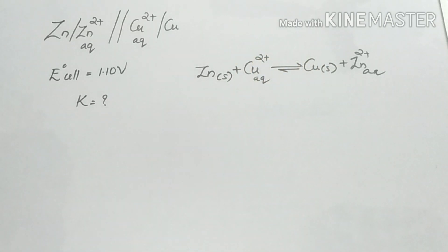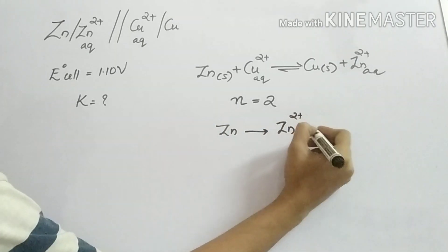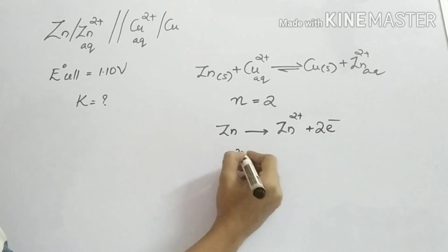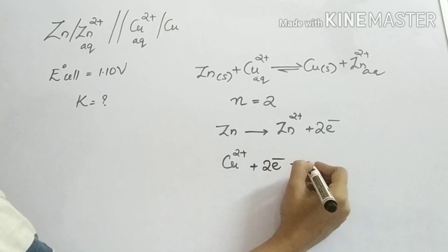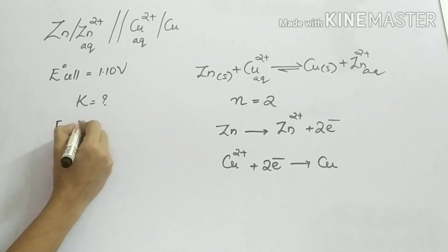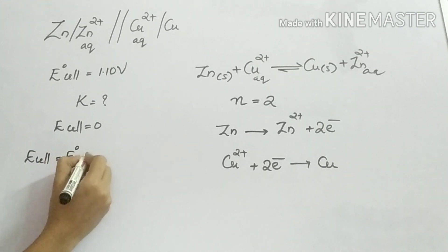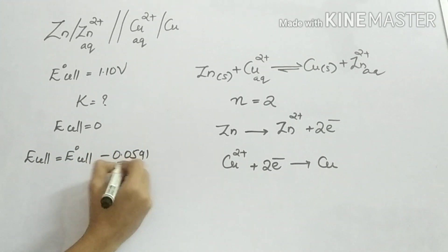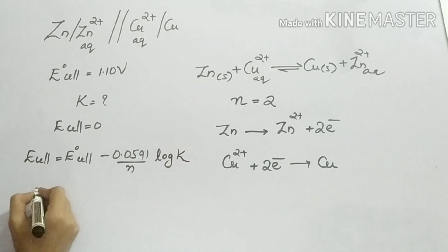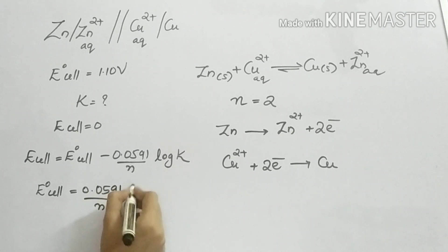For Cu2+/Cu, the number of electrons n is 2. E0 cell is equal to the equilibrium constant expression: E0 cell equals 0.0591 divided by n, times log K.